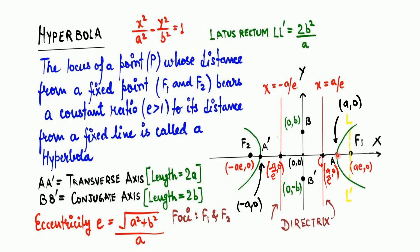This point is called the vertex, which is (a, 0). This point is called the focus, and this point is the point of directrix. This point is called the center, with coordinate (0, 0). The directrix coordinate is (a/e, 0). The vertex coordinate is (a, 0) and the focus coordinate is (ae, 0). Similarly on the negative side we have (-a/e, 0) for directrix, (-a, 0) for vertex, and (-ae, 0) for focus.